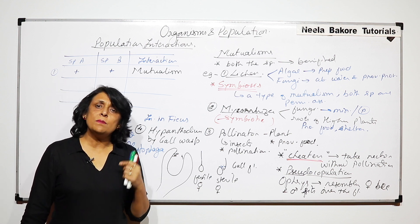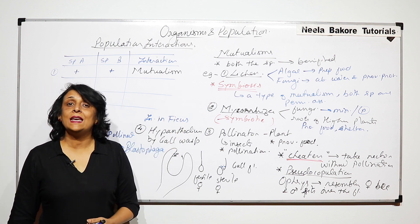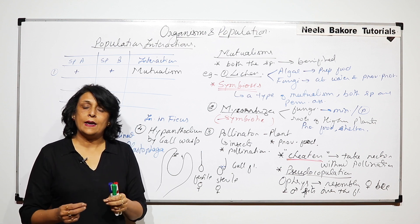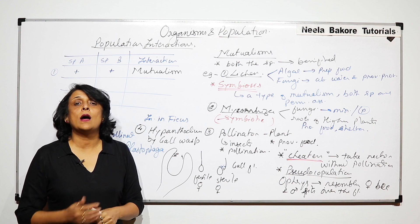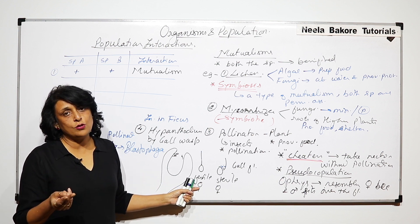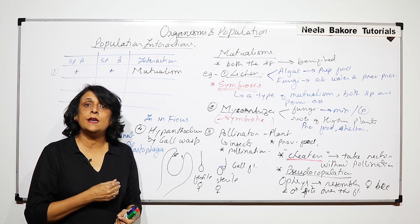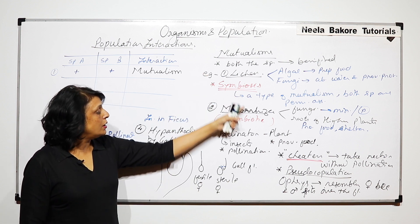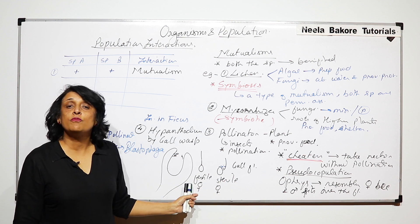And a similar kind of mutualism is seen in case of Yucca flower. In Yucca flower, pollination is done by Yucca moth. And if one is there, the other one is also going to survive. And if one is eliminated, the other one will again get eliminated. So all these are the examples of mutualism.